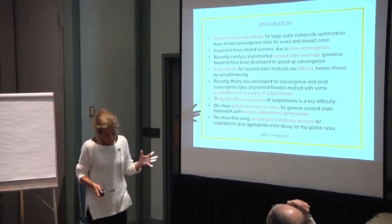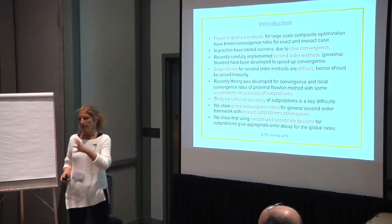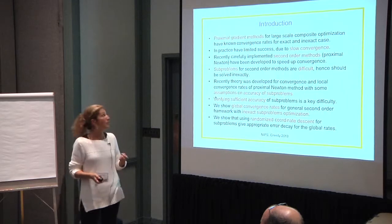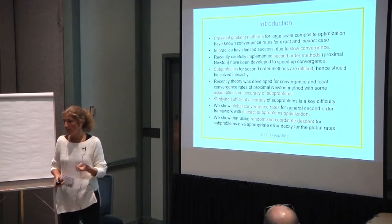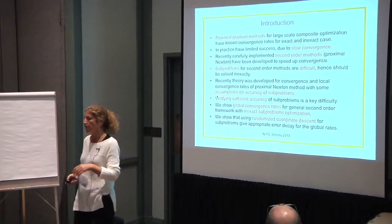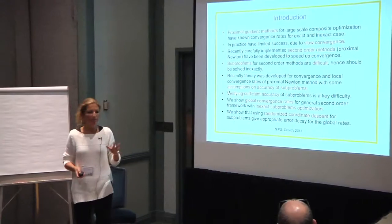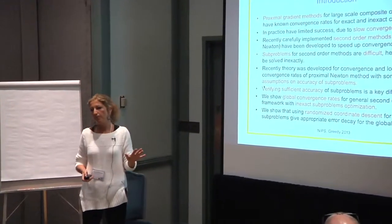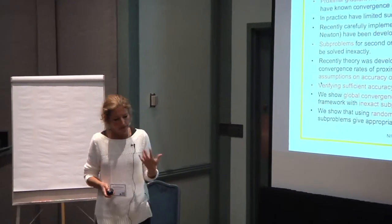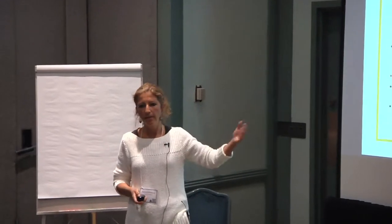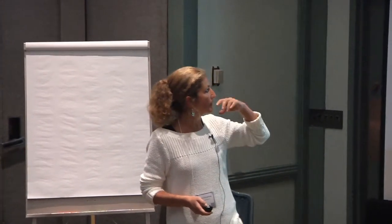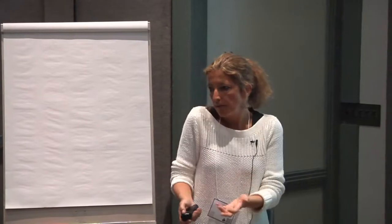Until relatively recently there's been a lot of concentration of work on proximal gradient methods for large-scale optimization, for good reasons. They're interesting methods and a fair amount is known by now in terms of convergence rates and the inexact case. But it has been known for a long time that these methods tend to be slow to converge on quite a few problems.